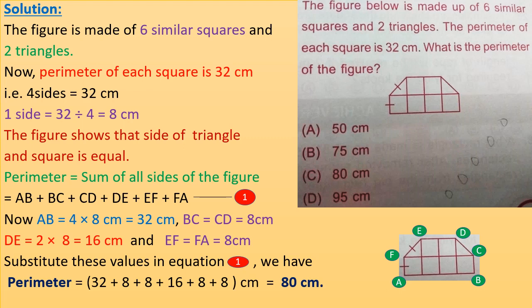AB equals 4 times 8 cm equals 32 cm, since there are 4 squares along AB, each of side 8 cm. BC is a side of a square, so BC equals 8 cm. CD is also 8 cm, since the triangle side and square sides are equal.